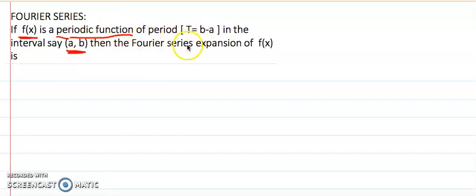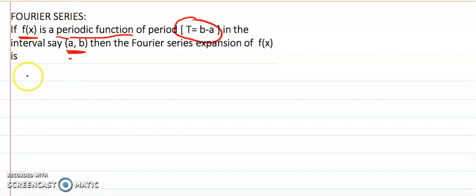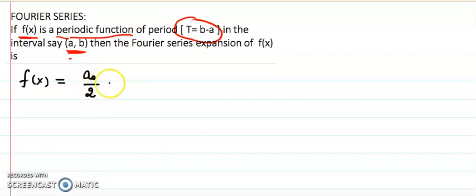Given the function and the interval, we can find the period T of the function by taking the difference of the final and initial endpoints of the interval — it can be open or closed depending on the nature of the function. So T equals b minus a. The first step is to write the function on the left side. On the right side we have three terms: a constant term written as a-naught over two, then an infinite sum of cosine terms, and then sine terms.